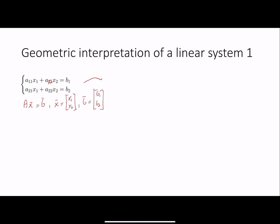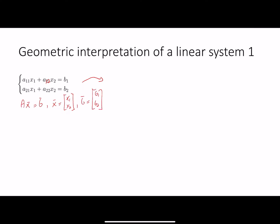What we're going to do now is take this linear system of equations and rewrite it slightly. We're going to take x₂ and keep it on the left-hand side, transferring everything else to the right-hand side. Rewriting, we get: x₂ equals minus a₁₁ over a₁₂ times x₁ plus b₁ over a₁₂. The other equation likewise gives x₂ equals minus a₂₁ over a₂₂ times x₁ plus b₂ over a₂₂.